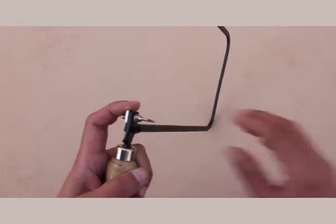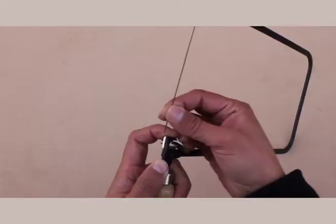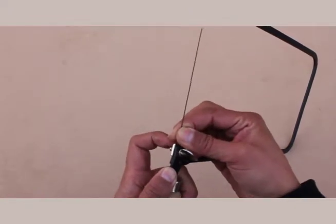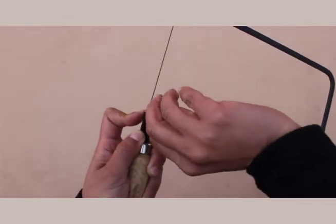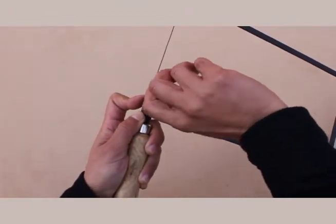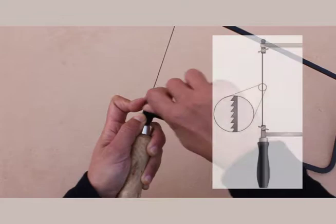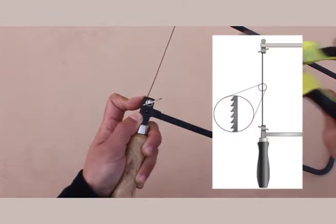Loosen the wing nut at the end of the handle, then clamp the blade between the frame and the wing grip and tighten the wing nut. Make sure the blade teeth are pointing down and away from the frame.